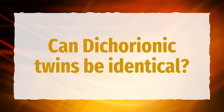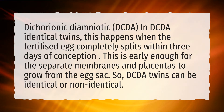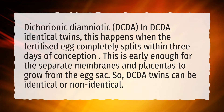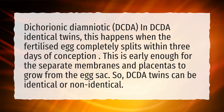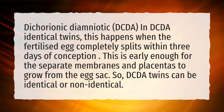Can dichorionic twins be identical? In dichorionic diamniotic (DCDA) identical twins, this happens when the fertilized egg completely splits within three days of conception. This is early enough for separate membranes and placentas to grow from the egg sac, so DCDA twins can be identical or non-identical.